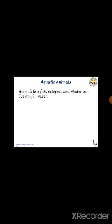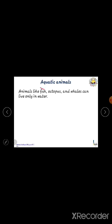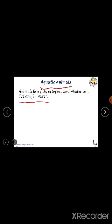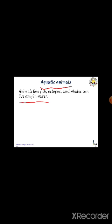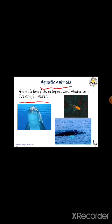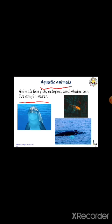Next, aquatic animals — animals that can live only in water are called aquatic animals. Examples for aquatic animals are blue whale, fish, dolphin, octopus, starfish, sea horses, etc.